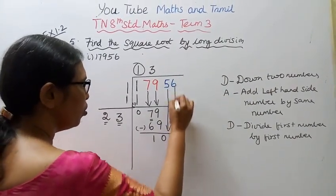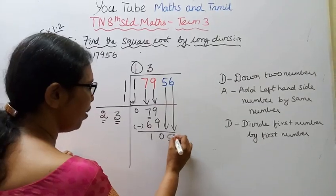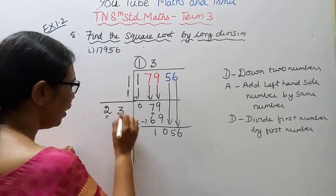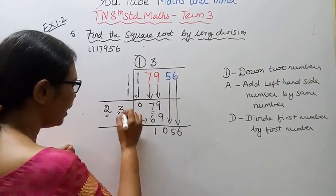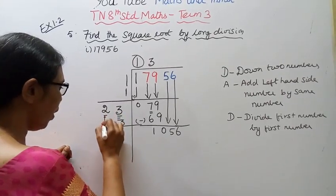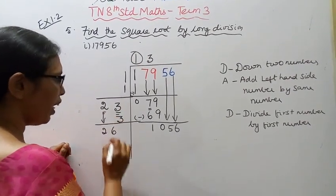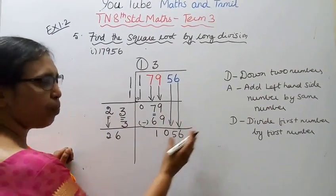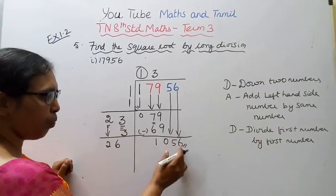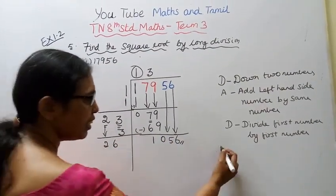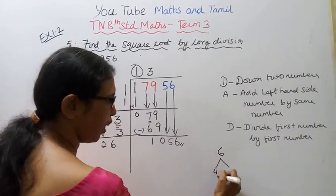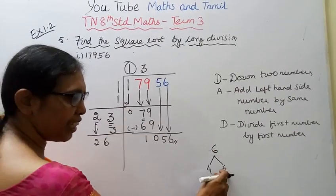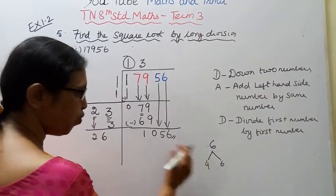Bring down the next 2 numbers: 56. Now add left hand side: 2 times 3 is 6, so left side becomes 26. Divide: what digit placed after 26 fits into 956? Try 4 — 264 times 4 equals 1056. Wait — try: 4, so 26 and 4: 264 × 4 = 1056. Checking: 6, 36, 36.